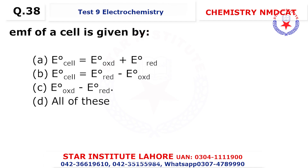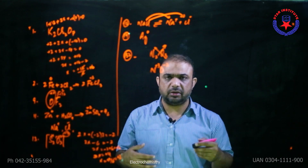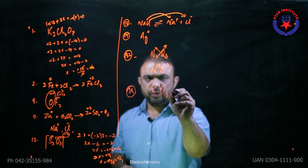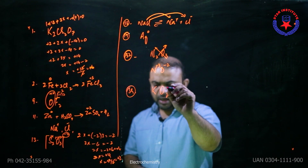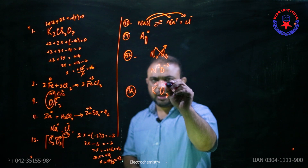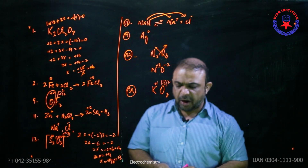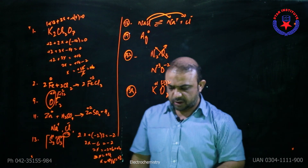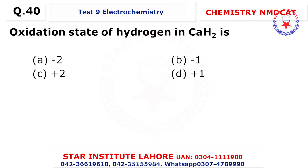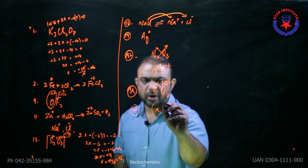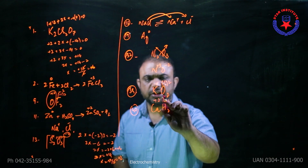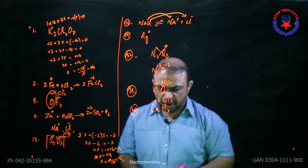Question 38: EMF value formula — E°cell = E°oxidation + E°reduction. Question 39: the oxidation state of KO₂ — potassium is a group one member so it is plus one; this is the formula for superoxide. Question 48: the oxidation state of hydrogen in calcium hydride — calcium is an electropositive element, so hydrogen shows a negative oxidation state of minus one for each hydrogen, totaling minus two. The choice is beta.